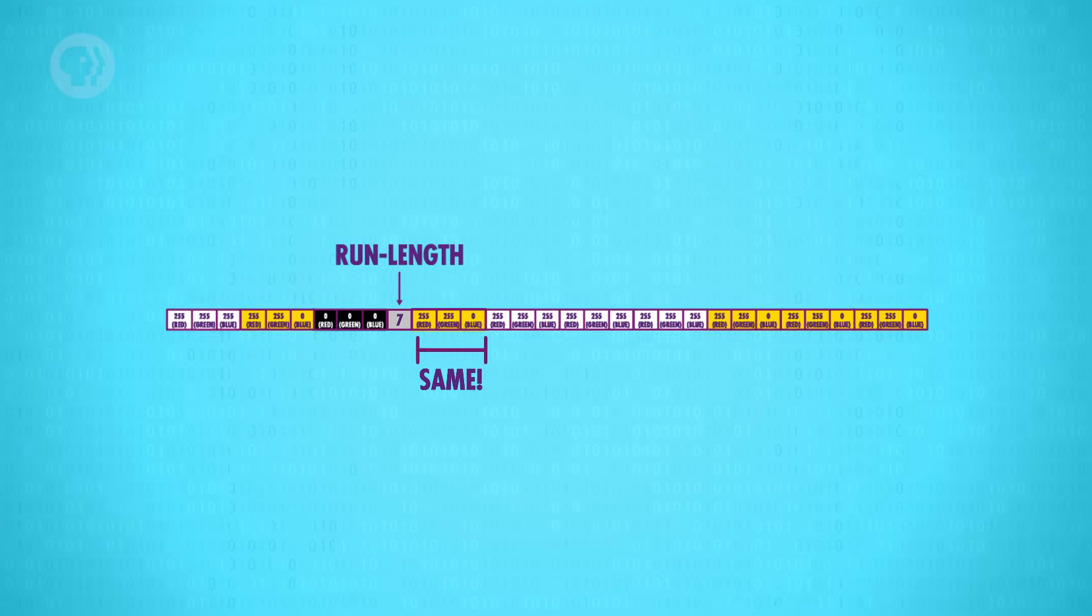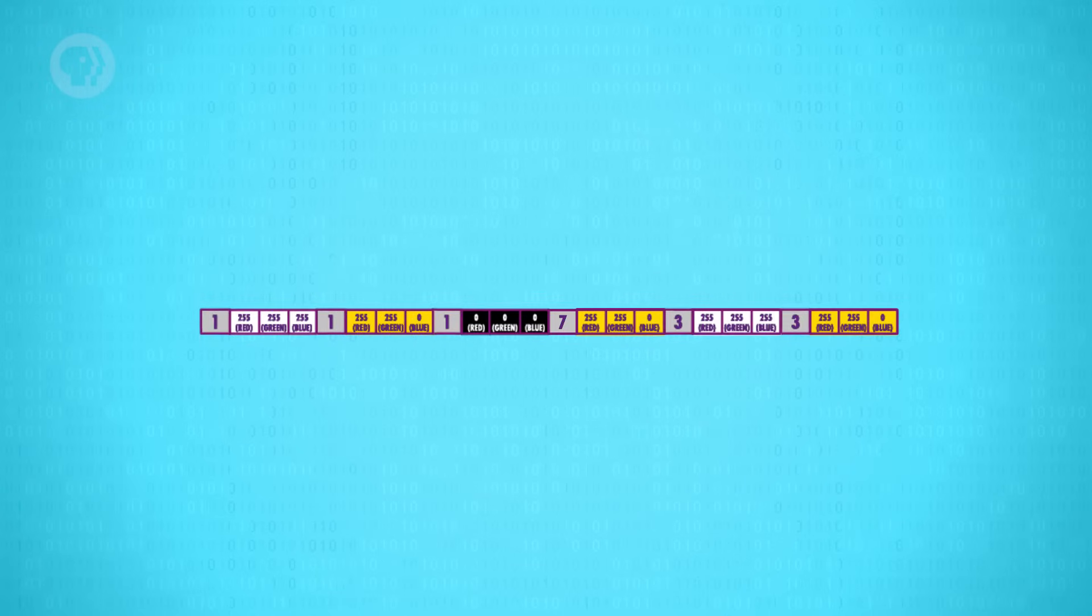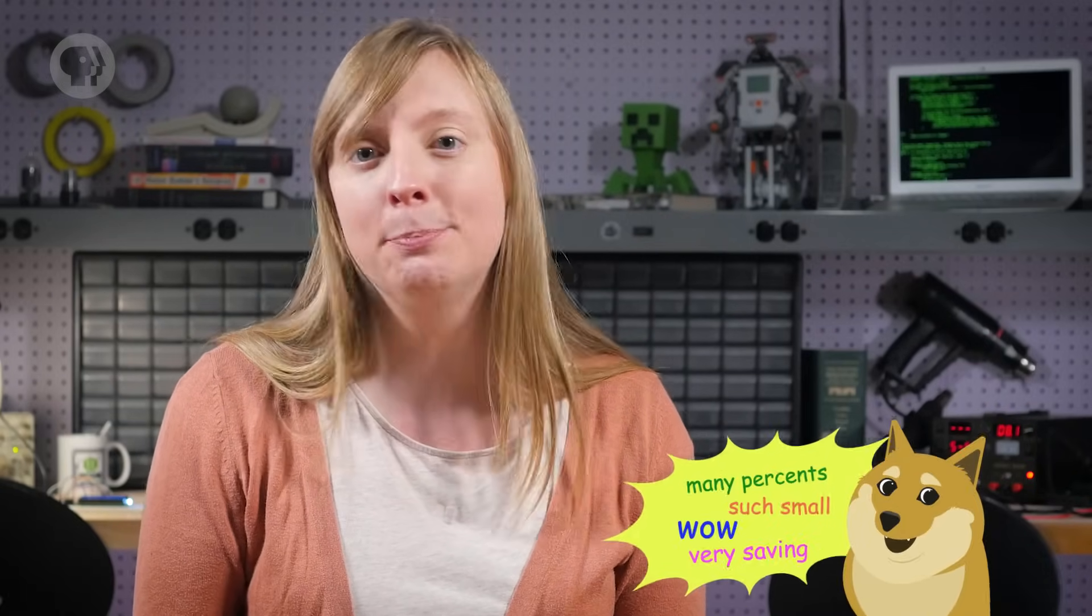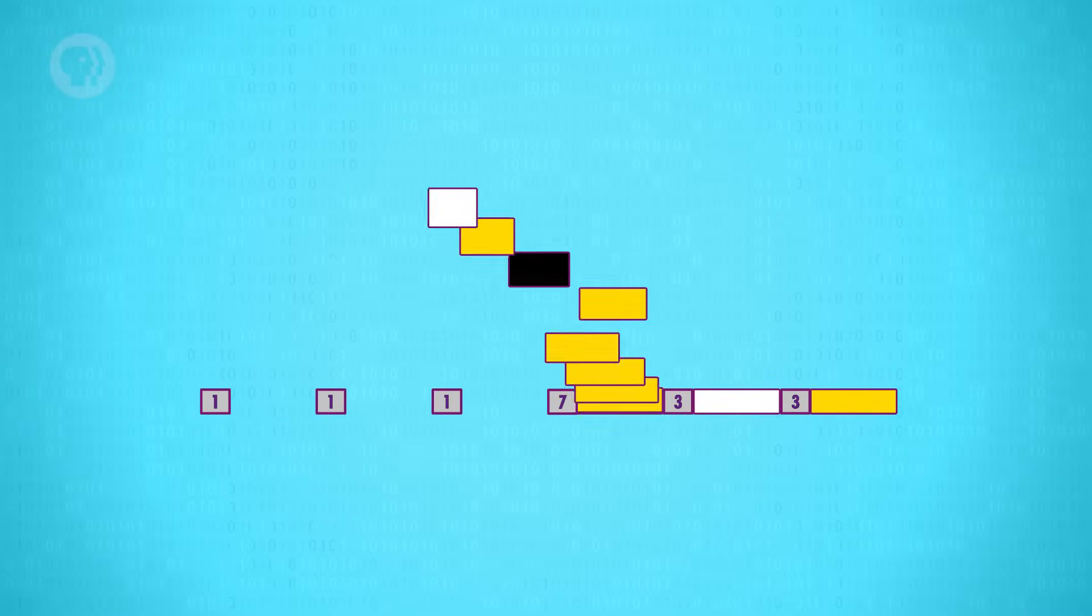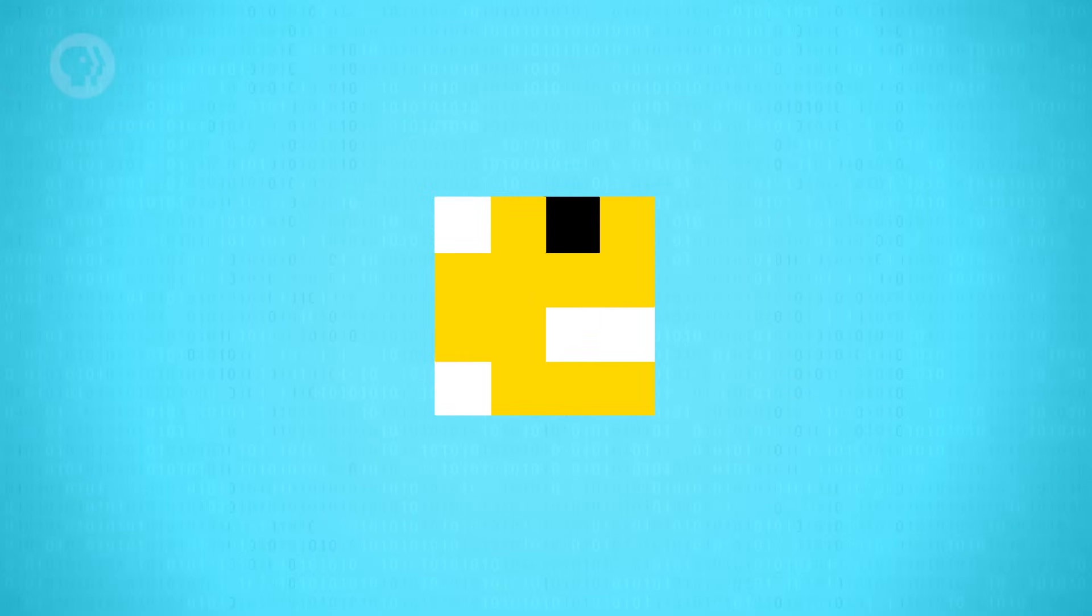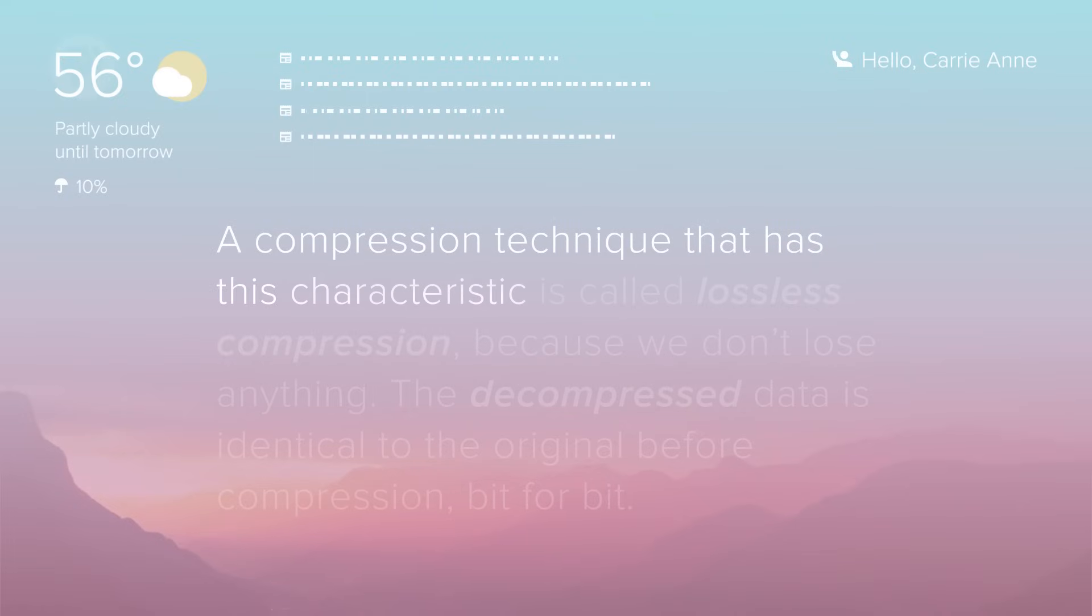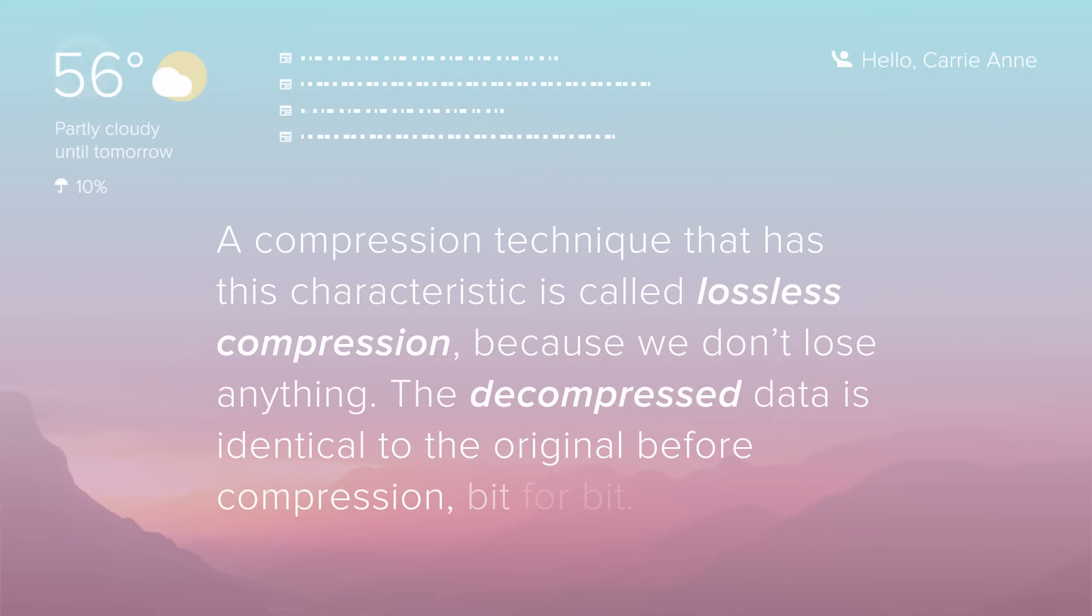And then we can eliminate the redundant data behind it. To ensure that computers don't get confused with which bytes are run-lengths and which bytes represent color, we have to be consistent in how we apply this scheme. So we need to preface all pixels with their run-lengths. In some cases, this actually adds data, but on the whole, we've dramatically reduced the number of bytes we need to encode this image. We're now at 24 bytes, down from 48 – that's 50% smaller – a huge saving! Also note that we haven't lost any data. We can easily expand this back to the original form without any degradation. A compression technique that has this characteristic is called lossless compression, because we don't lose anything. The decompressed data is identical to the original, before compression, bit for bit.